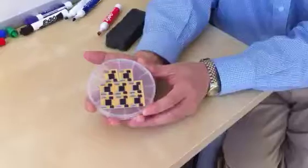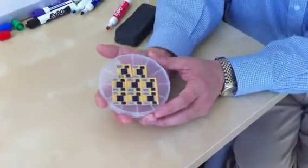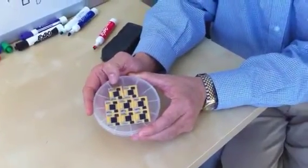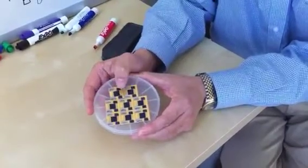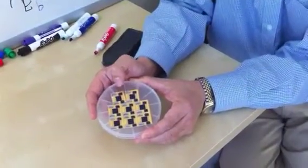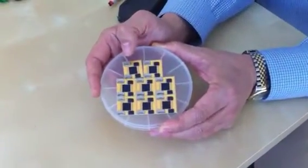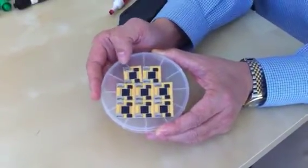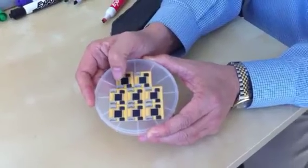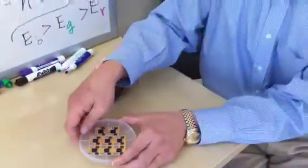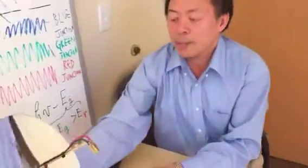In the center, you have the one centimeter square photovoltaic cell. On either side, you have the diode for bypass in case the photovoltaic cell is blocked from the sun. And on either side, you have the positive terminal and the negative terminal.